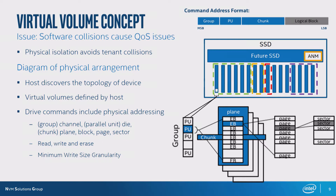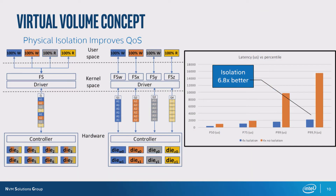This detailed slide shows the command format from the OCSSD 2.0 spec. The host has control down to what's called the chunk level; below that the drive has control of addressing. The host software can control placement of IOs down to a channel, parallel unit — which is a NAND die — and a chunk, which is a smaller subset within that die. I show a future SSD with four tenants that are separating channels across each collection within that drive.